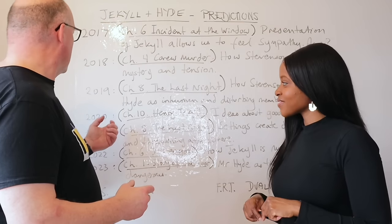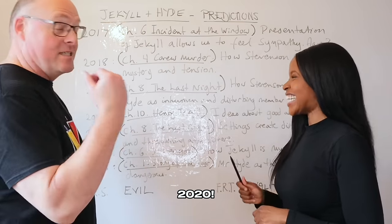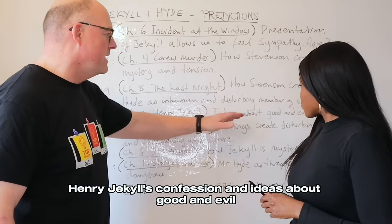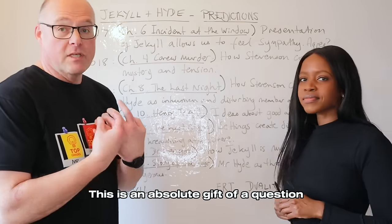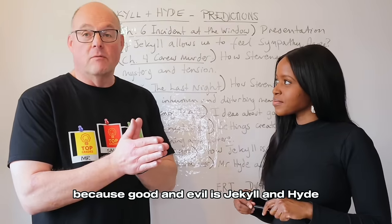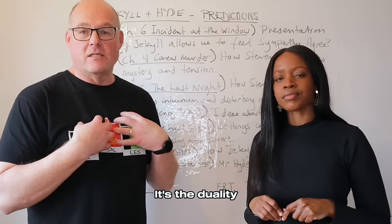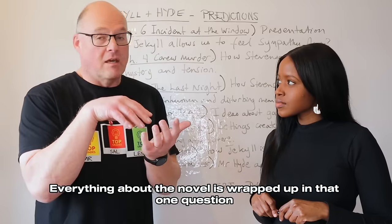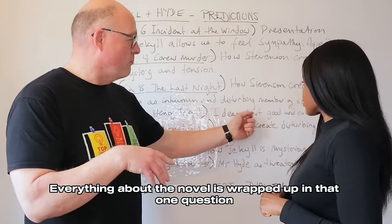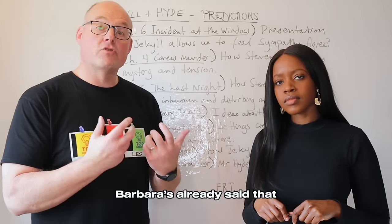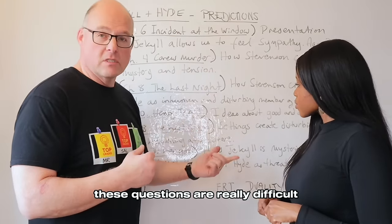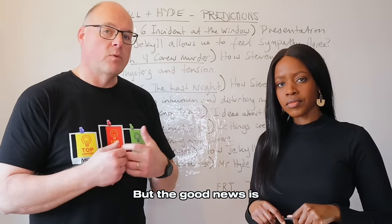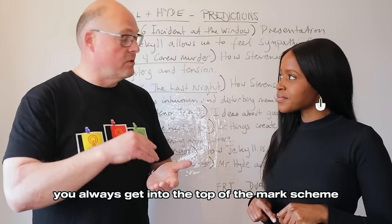In 2020, the extract came from chapter ten — Henry Jekyll's confession — and the question was about ideas about good and evil. This is an absolute gift of a question because good and evil is Jekyll and Hyde — the duality — since Jekyll contains both good and evil and represents all of us. Everything about the novel is wrapped up in that one question. These questions are really difficult because they're always about the author's ideas, but the good news is that when you write about the author's ideas you always get into the top of the mark scheme.